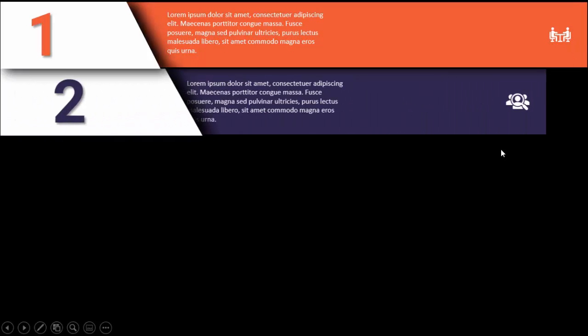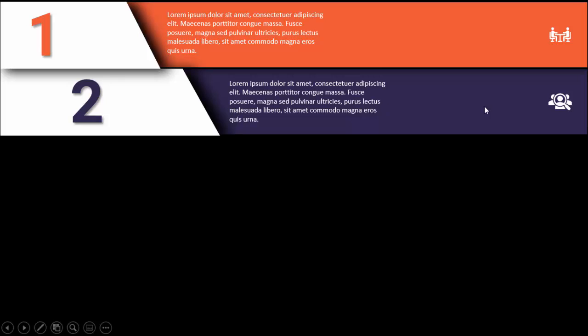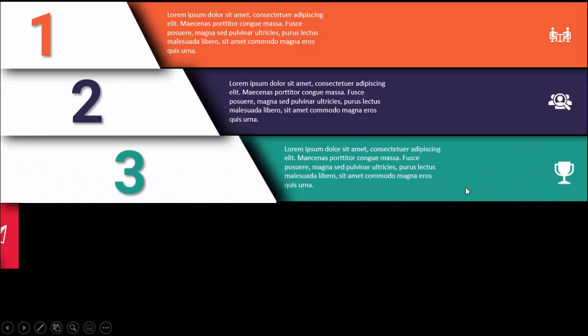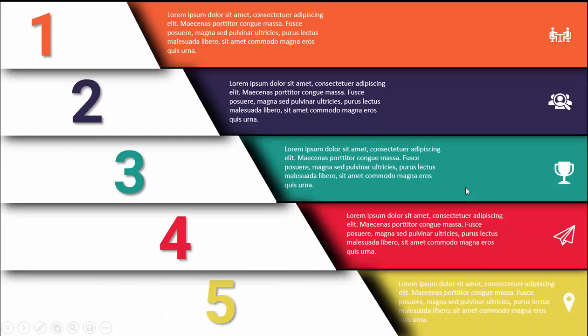In today's tutorial I am going to show you how to create a 5-step infographic slide in PowerPoint. When I click, the first option comes with a shadow effect — you can add detail text and an icon. Then it comes the second option with a different color combination, then the third, fourth, and fifth option. I have created two slides: one with animation and another without.